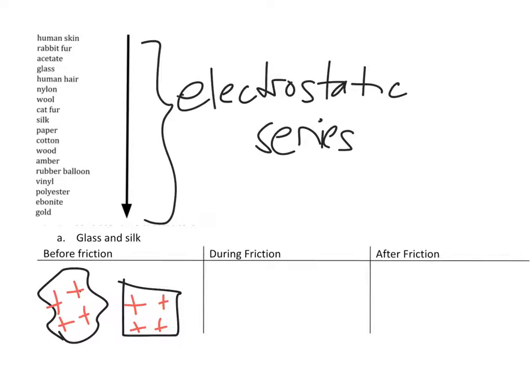This is before friction, so there's been no friction between them. Therefore, they have all their charges still, so they're neutral objects. They each have four electrons, so they are overall neutral. This is before friction.